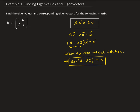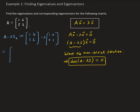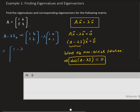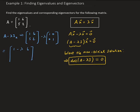We take A minus lambda times I. Since A is two by two, the identity matrix must also be two by two. This gives us the matrix: one minus lambda, six, five, two minus lambda.